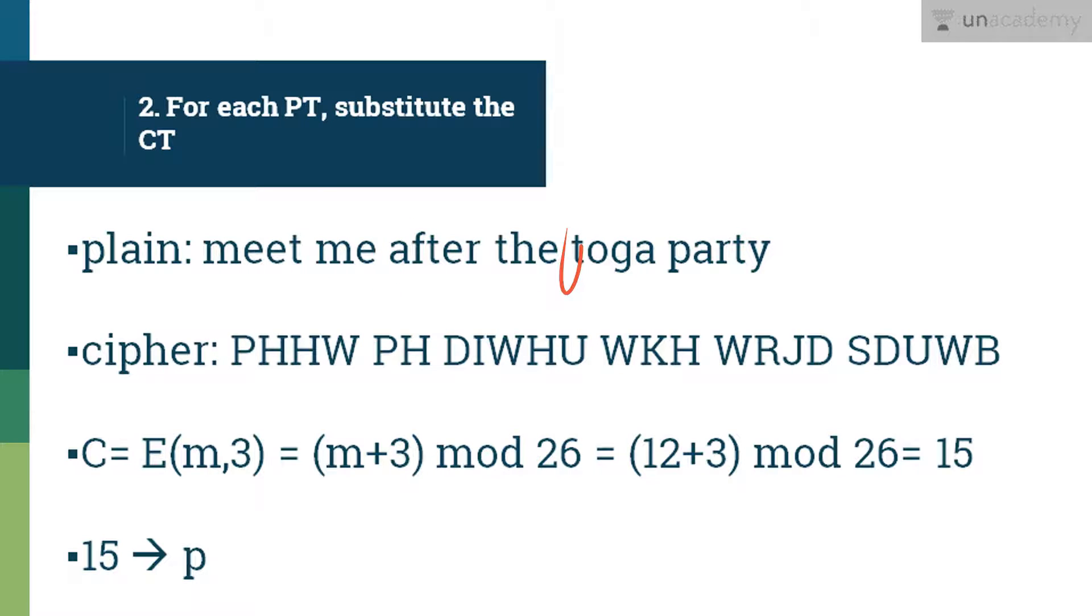And now, once we assign numerical values to each letter of the sentence, we replace it by the alphabet which is coming three places after it. So your M becomes P, your E becomes H, your E again becomes H, your T becomes W, and so on.